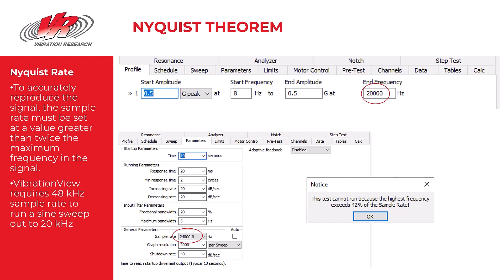If you plan to run a test collecting data between 20 and 20,000 Hz, in this particular test I was trying to run, I was going between 8 Hz and 20,000 Hz, then the sample rate has to exceed 40,000 samples per second.